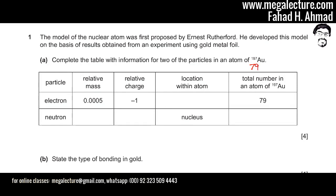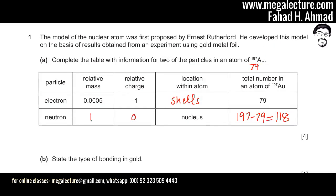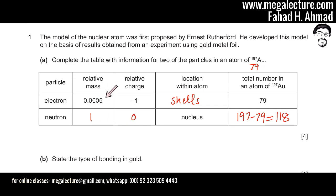AU has a proton number of 79 with an atomic mass or nucleon number of 197. Filling in the table: the relative mass of a neutron is 1, the relative mass of a proton is also 1, and the electron is 1836 times lighter, so its relative mass is 0.0005. The relative charge on a neutron is 0 — it's neutral — and the location of electrons is in shells.